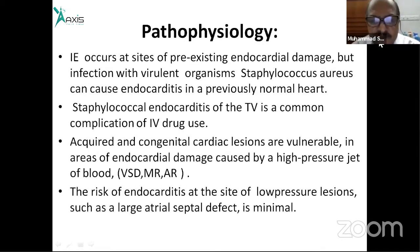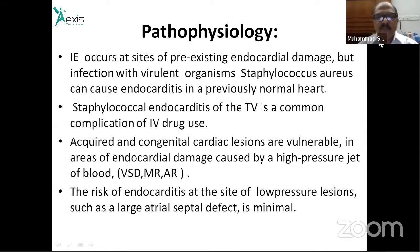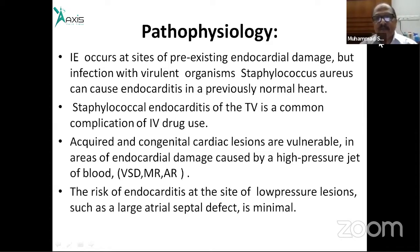Looking at pathophysiology: a virulent organism can cause damage to the underlying cardiac structure. Infective endocarditis typically occurs at the site of pre-existing endocardial damage. However, infection with a very virulent organism such as Staphylococcus aureus can cause endocarditis even in a previously normal heart.